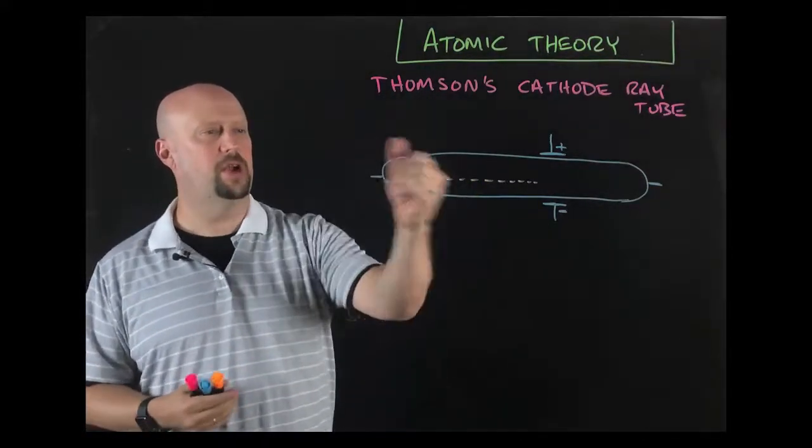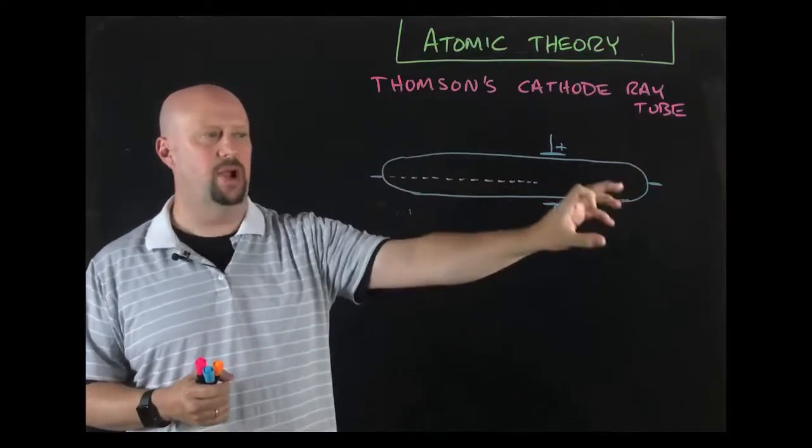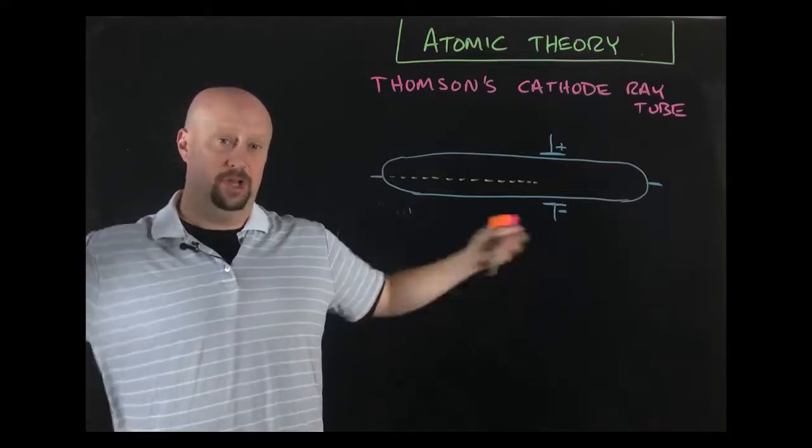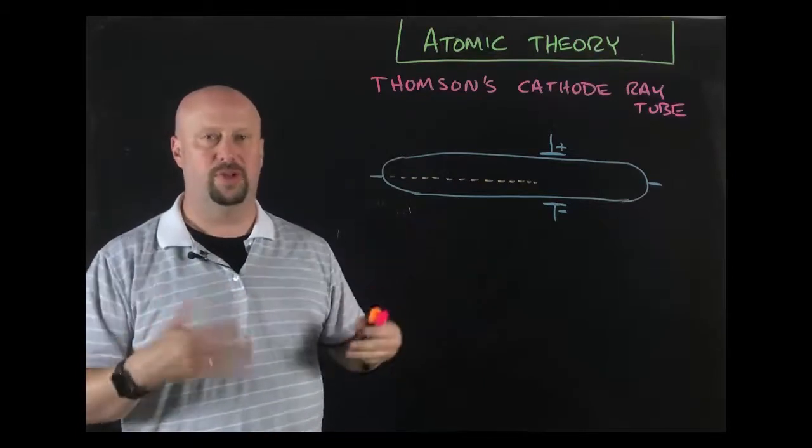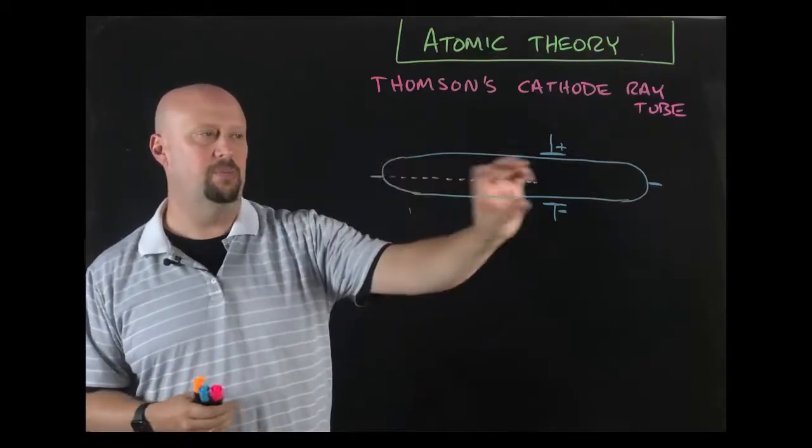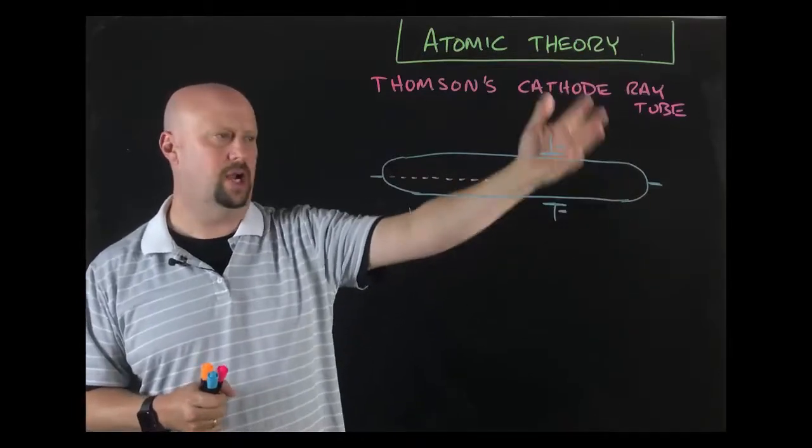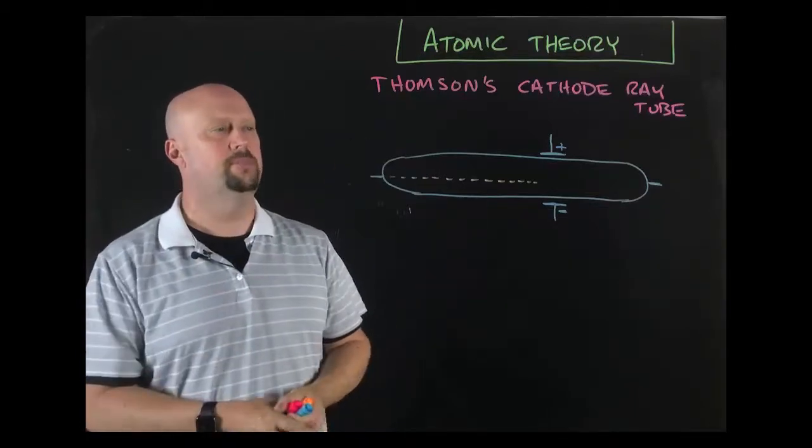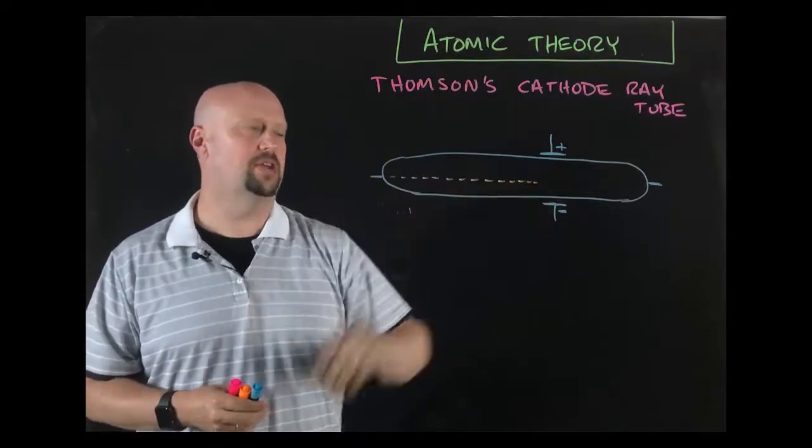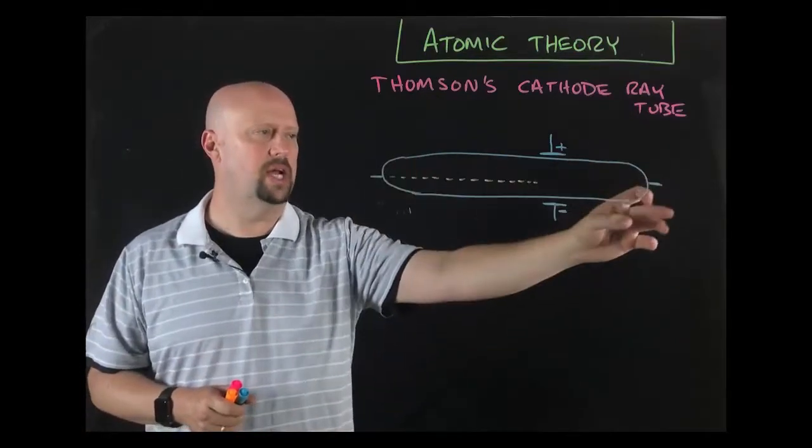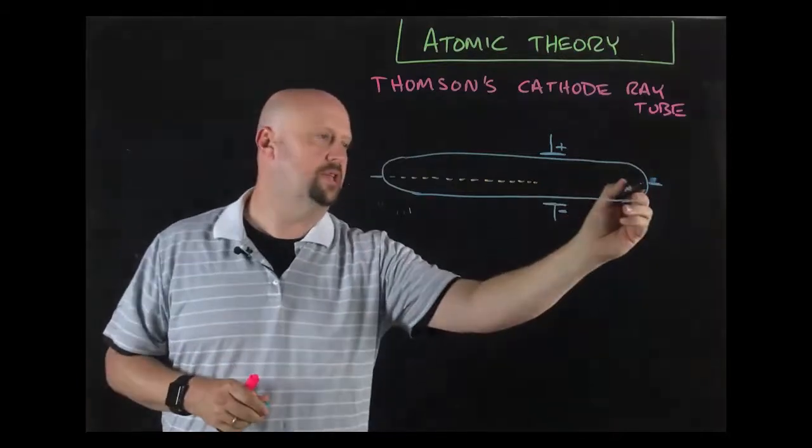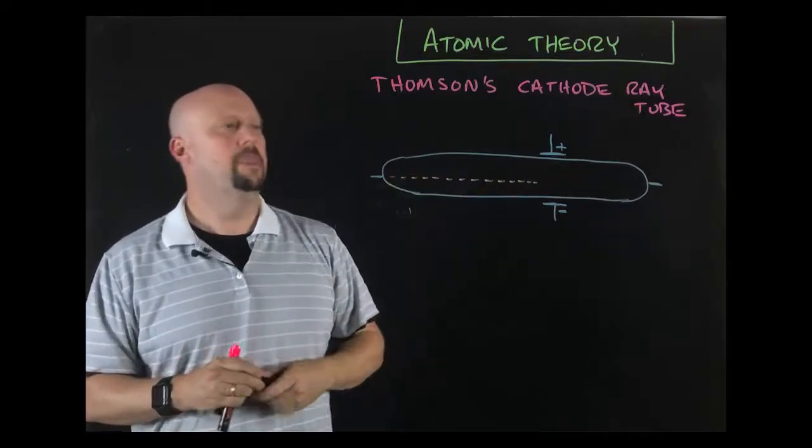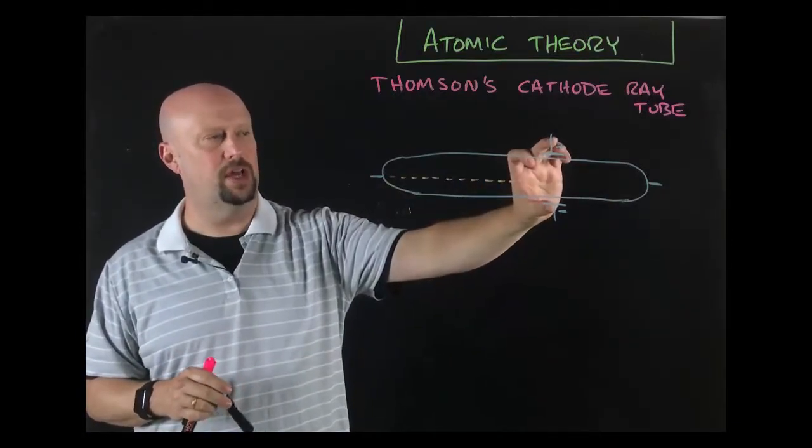Thompson's cathode ray tube experiment - he's firing a beam in this device. Cathode ray tube, you guys sort of know what that is - like an old style TV, the really big TVs, not flat screens. Those all worked under the principle of a cathode ray tube where you've got a beam fired off on one side. Thompson's experiment: he's firing the cathode ray from one end down to the other end.